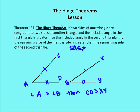The hinge theorem says that if I have two sides of a triangle — leaving the third side open just for demonstration — if two sides of one triangle are congruent to two sides of another triangle, so AC is congruent to BX and AD is congruent to BY, and the included angle in the first triangle is greater than the included angle in the second triangle...